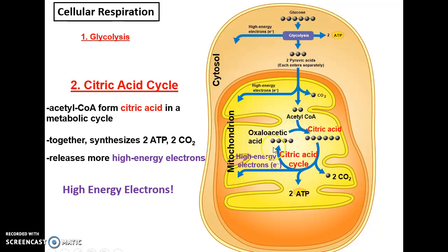Acetyl coenzyme A then enters the citric acid cycle — a cycle of many chemical reactions that continuously reforms the substrate for the cycle. This results in a net gain of 2 ATP, as well as high-energy electrons carried in special molecules and carbon dioxide being released.